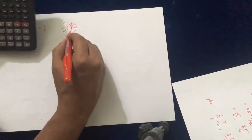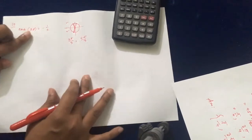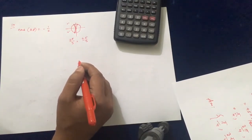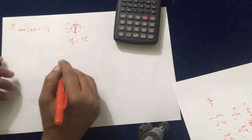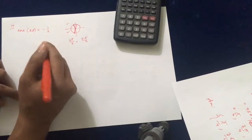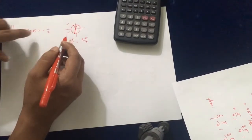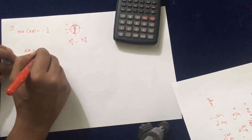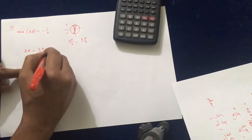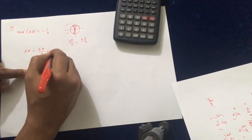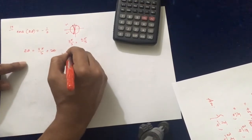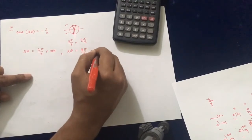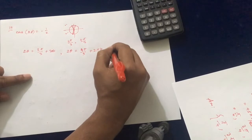We have two solutions so far, but the equation is in terms of 2θ, so we must use the periodic property. This is especially important here. We write two formulas: 2θ = 2π/3 + 2πk, or 2θ = 4π/3 + 2πk, where k is any integer.